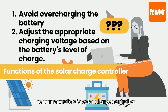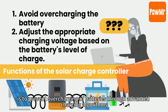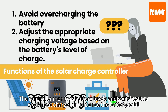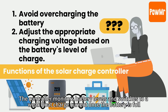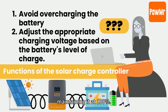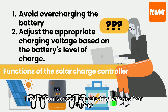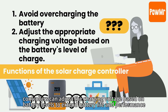The primary role of a solar charge controller is to prevent overcharging of the battery through advanced charging algorithms. The controller monitors battery levels and switches to a weak flow charging current once the battery is full, maintaining it at 100%. This function is crucial for protecting the battery from damage. Controllers can also adjust the charging voltage based on battery levels to extend battery life and performance.